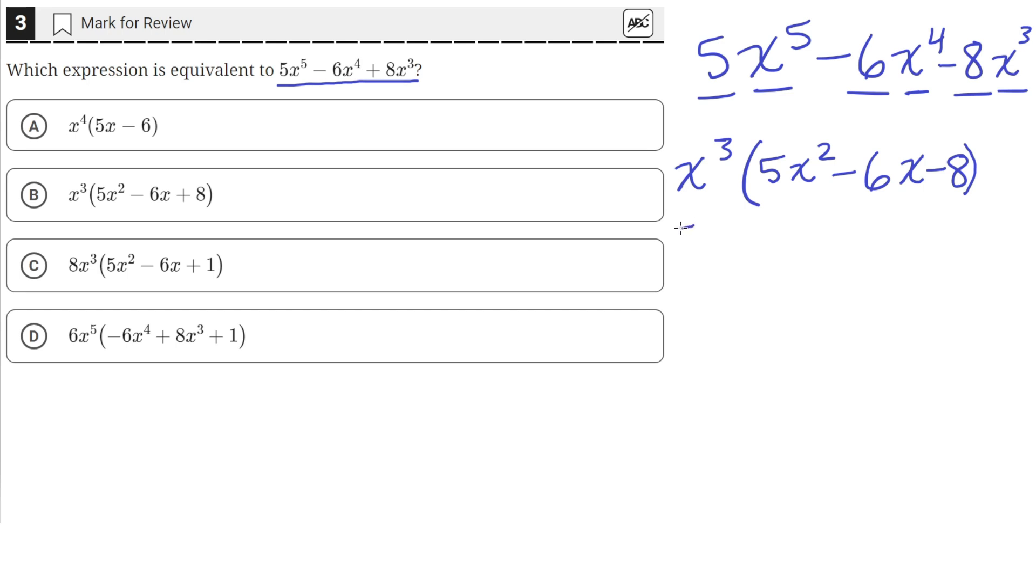So this is the correctly factored out version of the original expression. Both of these are equivalent. This is just the expression with an x cubed factored out. And this is equal to answer choice B.